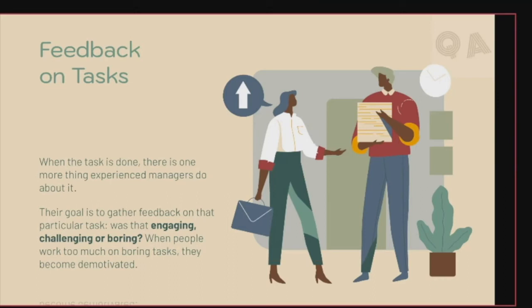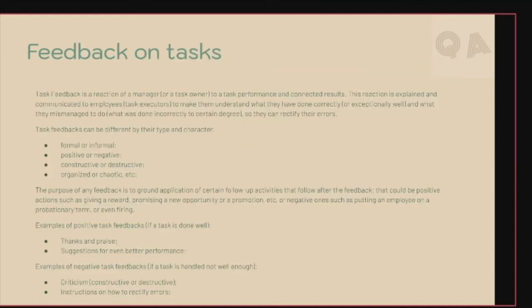Feedback on tasks is given by a team manager on any task assigned to an employee. It can be of different types based on its character: formal or informal, positive or negative, constructive or destructive, organized or chaotic. The purpose is to follow up after the feedback. Positive feedback may result in a reward, promotion, or salary hike, while negative feedback could lead to corrective action or, in the worst case, termination. Companies use it as an evaluation parameter on task performance.